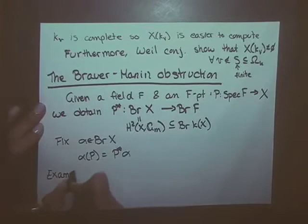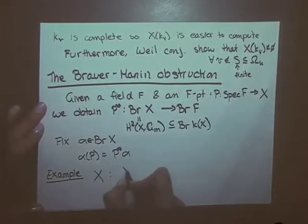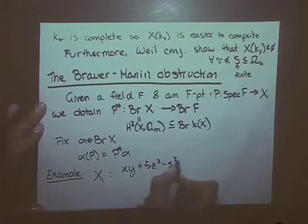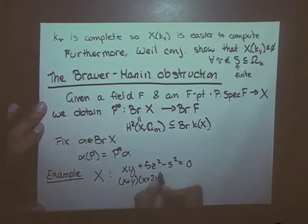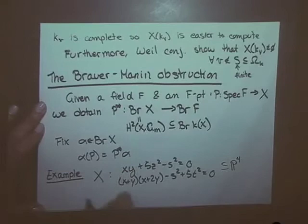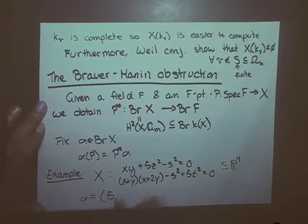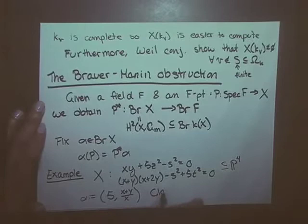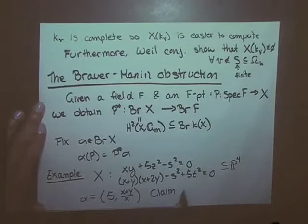Take X given by the equations xy + 5z² − s² = 0 and (x+y)(x+2y) − s² + 5t² = 0, inside P⁴. I can take the quaternion algebra (5, (x+y)/x) — this is an element in the Brauer group of the function field of X, and I claim this is actually in the Brauer group of X.